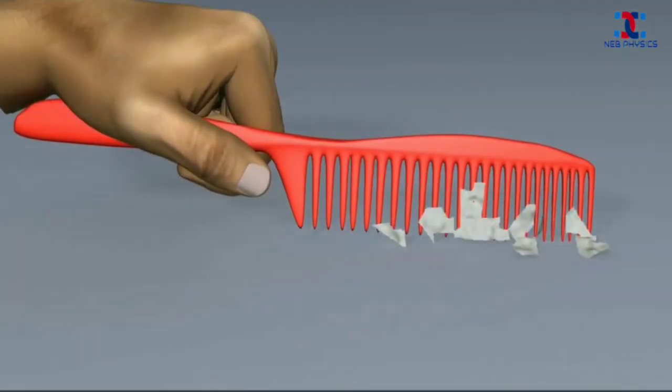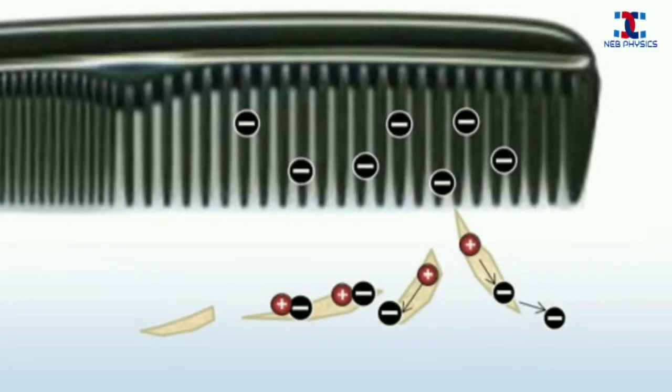And these electrons remain confined in the comb as static charges. When the comb is brought closer to pieces of paper, the positive charges are localized on paper due to induction. And as a result, the papers are attracted towards the comb.